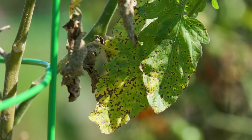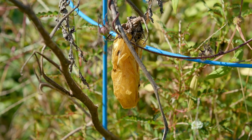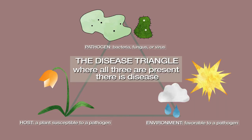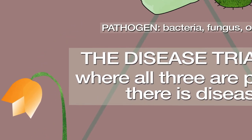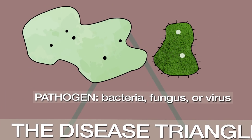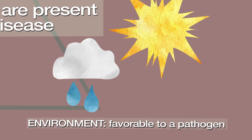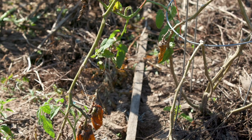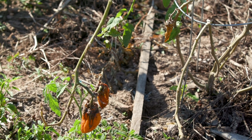Garden sanitation starts by understanding the life cycle for disease. We want to remember the disease triangle. The three pillars include a susceptible plant host, the presence of a pathogen — the bacteria, fungus, or virus — and a favorable environment for that pathogen. Where all three are present, we have disease.